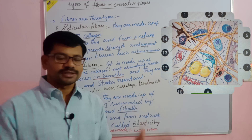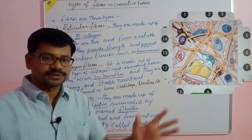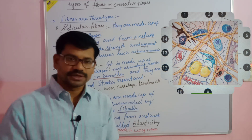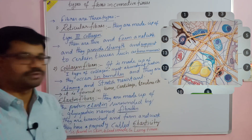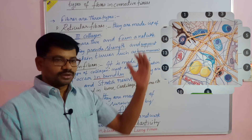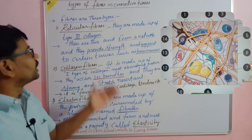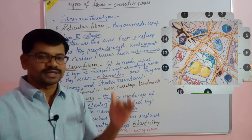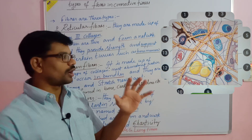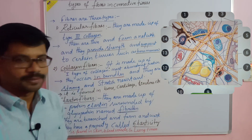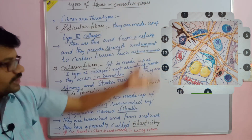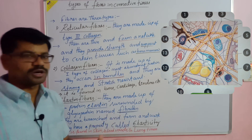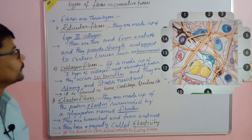In the last lecture we talked about what fibers are present, what cells are present, and how the ground substance is present. In today's lecture we are going to go in depth to understand what fibers are present in the connective tissue, what cells are present, and how the ground substance is present. If you see the picture, you can understand — it is a model diagram of connective tissue.